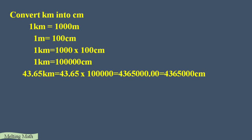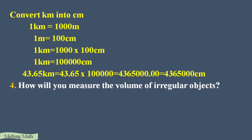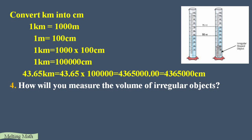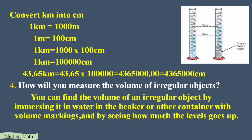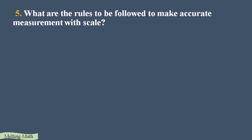Fourth question: how will you measure the volume of an irregular object? We measure it using a measuring jar filled with water. After filling the water, immerse the object in it. Observe how much the water level rises. Subtract the before level from the after level to get the volume, and represent it in cubic centimeters. The volume of an irregular object can be found by immersing it in a beaker or container with volume markings.